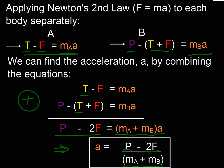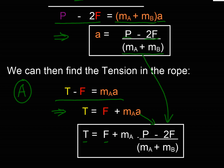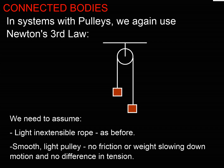That overall-system approach only works when forces and bodies are moving in exactly the same direction. Rearranging gives the acceleration: a = (P − 2F) / (m_A + m_B). Once we have the acceleration, we substitute back into the F = m_A × a equation for body A and rearrange to find the tension T, which equals the frictional force on body A plus m_A times the calculated acceleration.